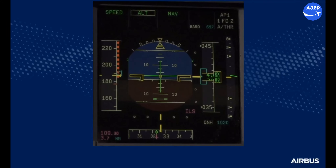In some cases, the recommended speed for go-around requested by the procedure may be slightly above the VFE displayed on the PFD. This is due to the fact that the VFE is linked to the slat/flap lever position. The overspeed warning will not be triggered because it takes into account the real slat/flap position.